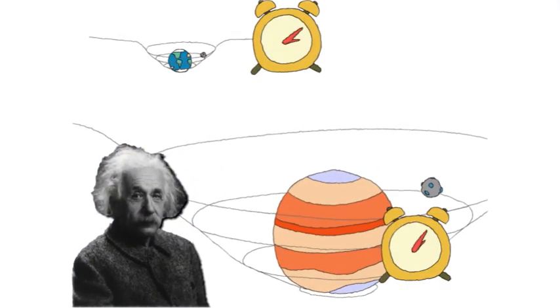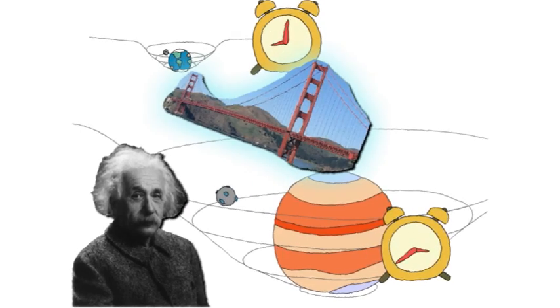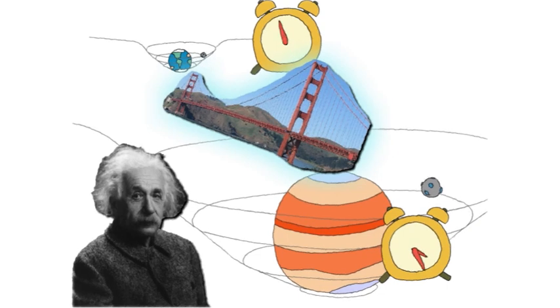Einstein's theory of general relativity says that time moves more slowly in stronger gravity. So if you could somehow link two regions of space where gravity is different, you could travel back and forth between them to move forward or backward through time.